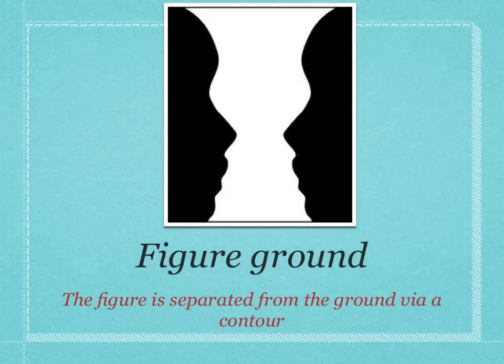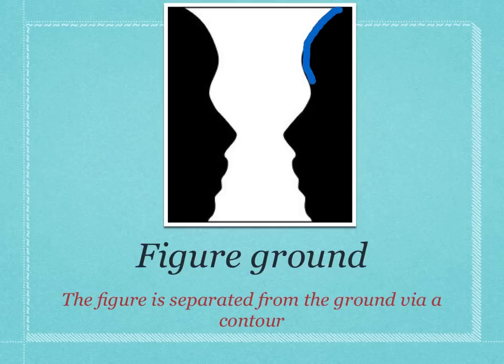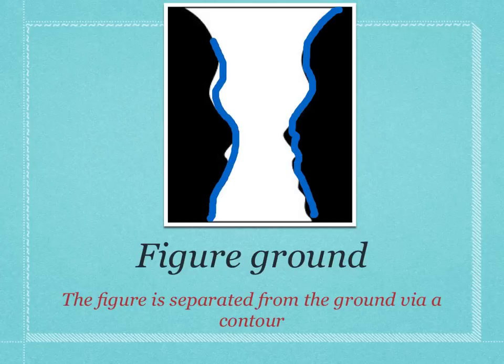We're going to look at four Gestalt Principles and we'll start with Figure-Ground. In this visual image it's quite clear that we can distinguish the two black faces from the white bars, because we can perceive a contour that clearly separates these two images — we call this a reversible image.